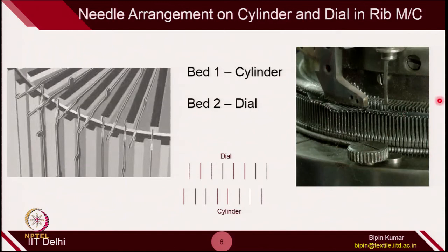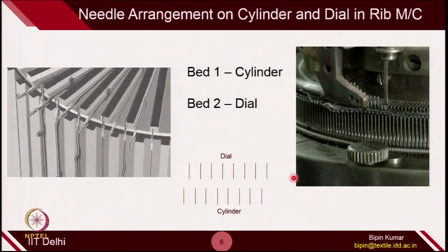The cylinder needles are laterally shifted from the dial needles so that when the dial does any reciprocative movement, it can do so in between cylinder needles, and similarly cylinder needles can do reciprocation in between dial needles. In the actual machine picture, you can see in the clearing position that the dial needle comes out along the radius direction, and you can also see the vertical set of cylinder needles doing vertical reciprocations, with sufficient gaps so they can move in between opposite needles. One set of needles is displaced laterally by half pitch.